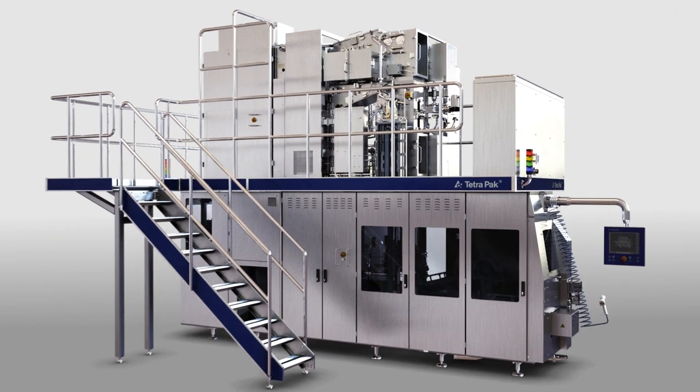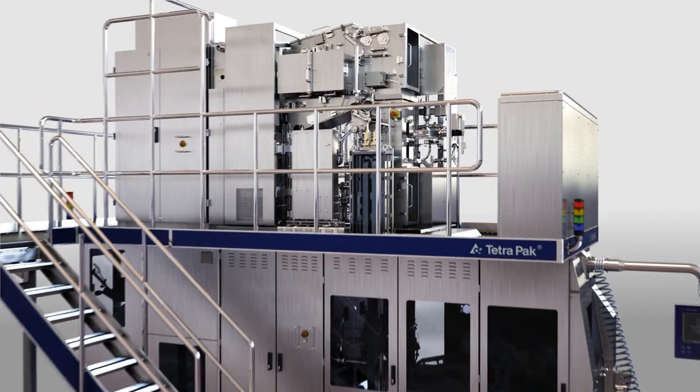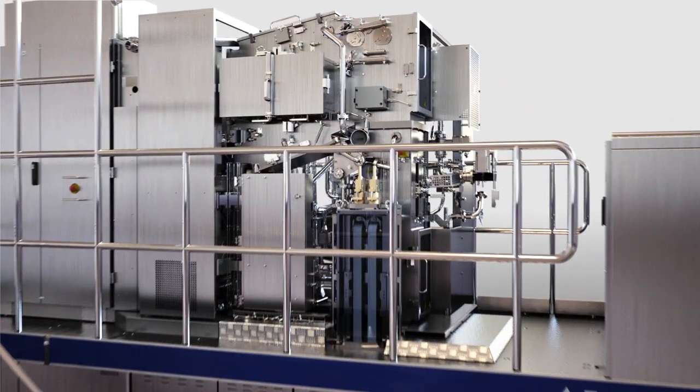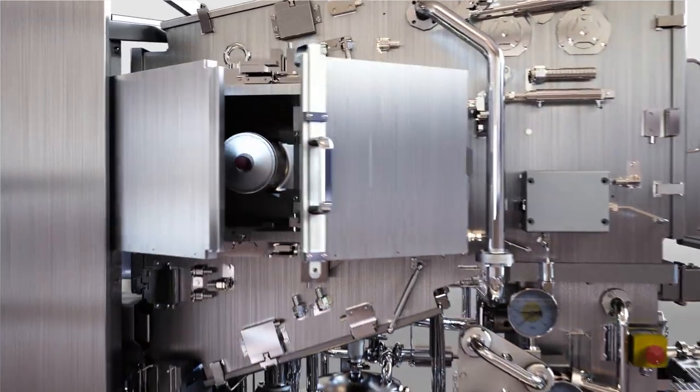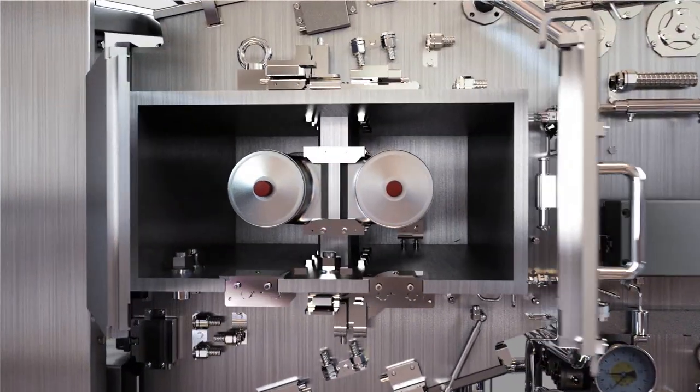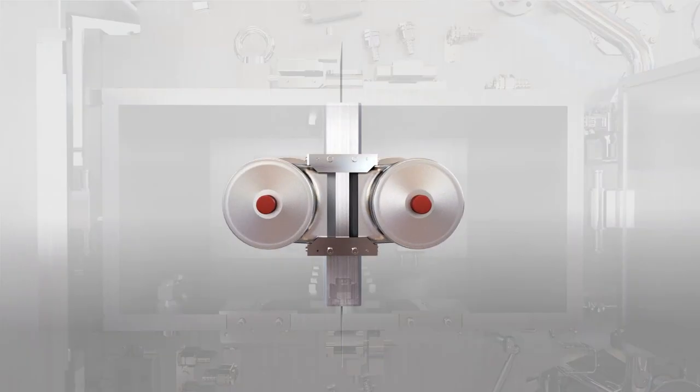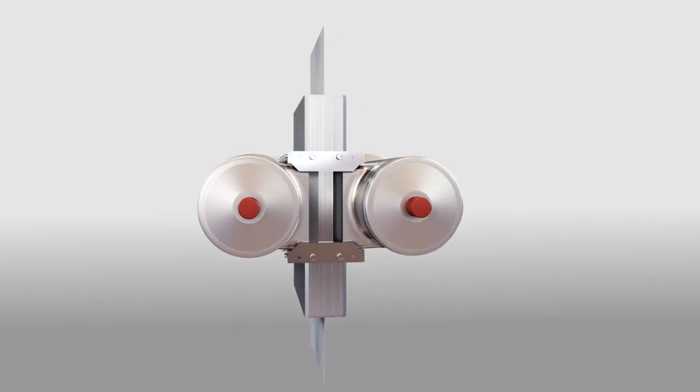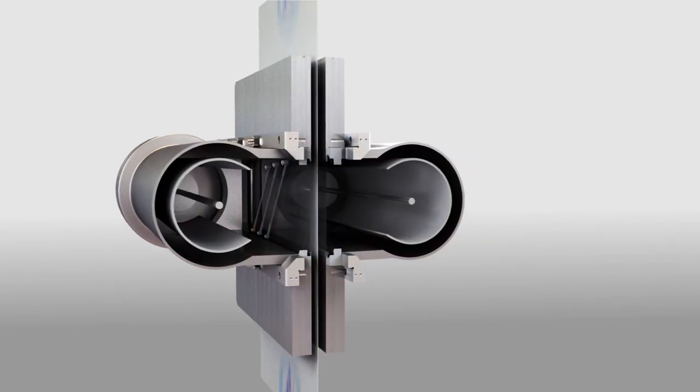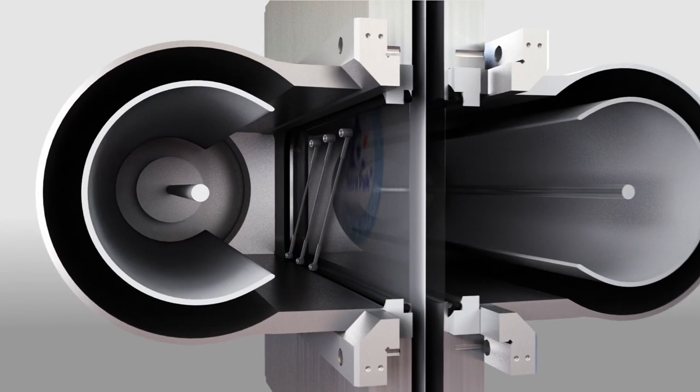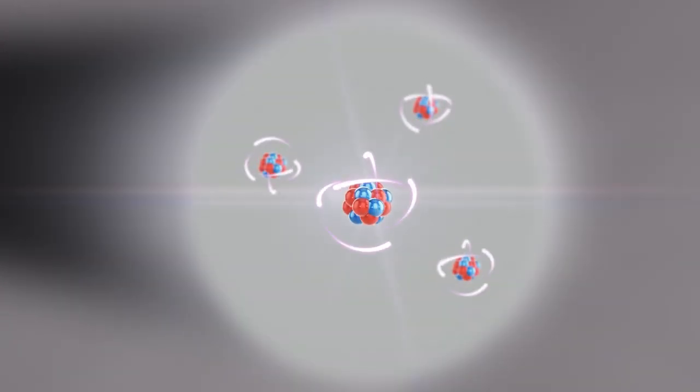The E-beam system ensures the same sterilization performance as hydrogen peroxide while offering numerous advantages like better environmental performance, higher production capacity with no increase in the machine dimensions, and the flexibility to pack chilled, extended shelf life, and ambient products on the same machine platform.